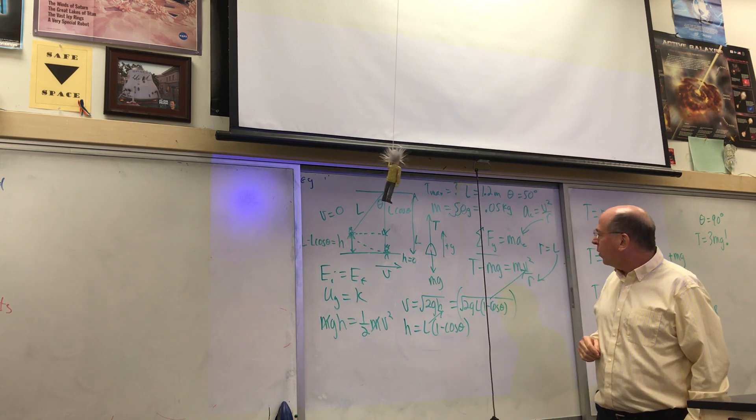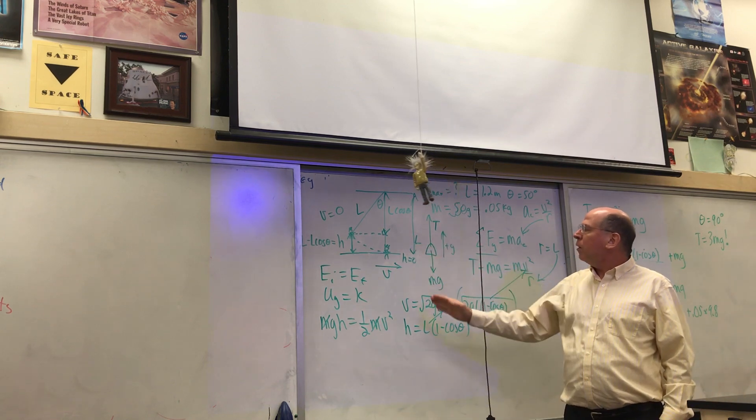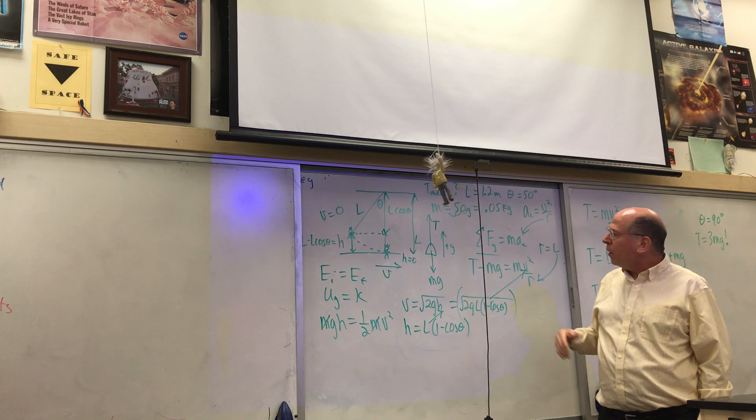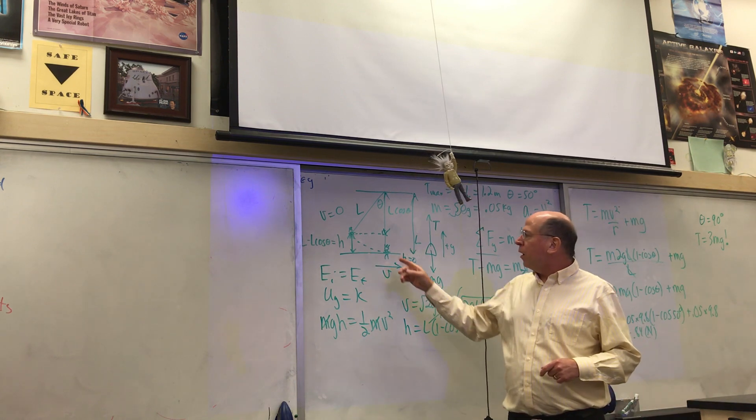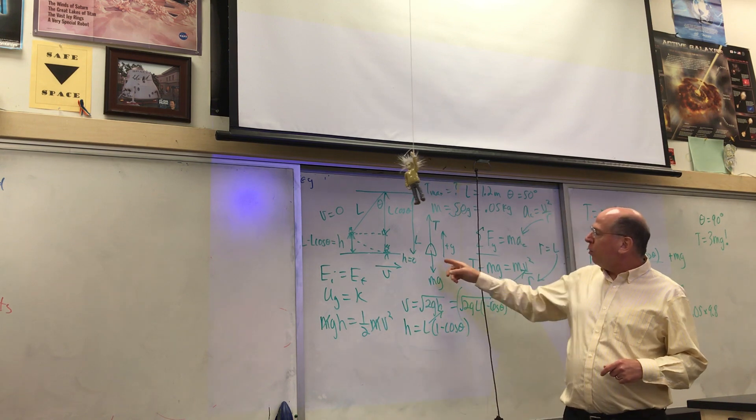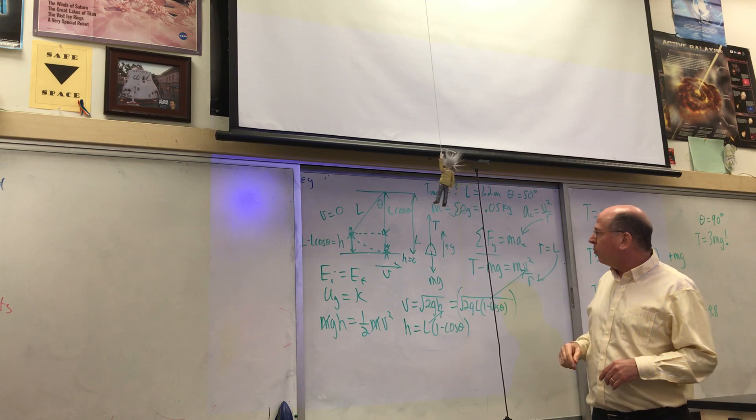Obviously we know the maximum tension has to be down at the bottom, where tension has two jobs: it has to hold up the weight and it has to make him turn. Additionally, this isn't uniform circular motion—he's speeding up as he falls down, so he's going the fastest at the bottom too. A lot of reasons why maximum tension is at the bottom.